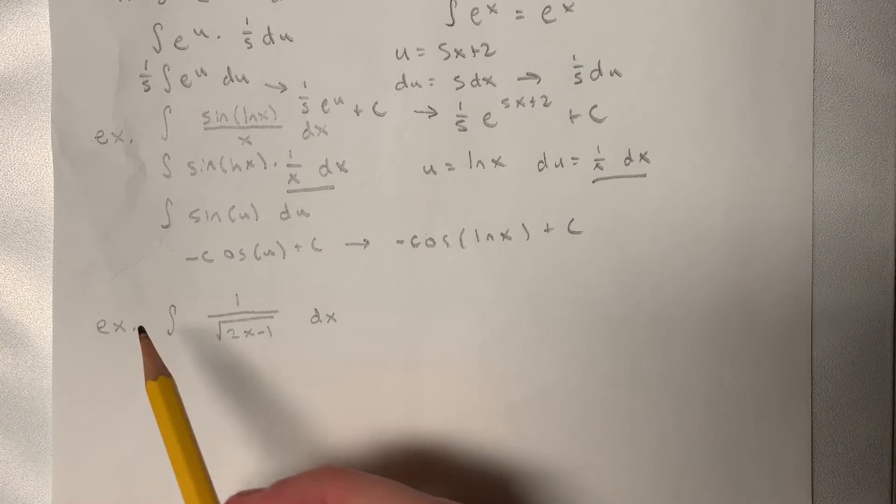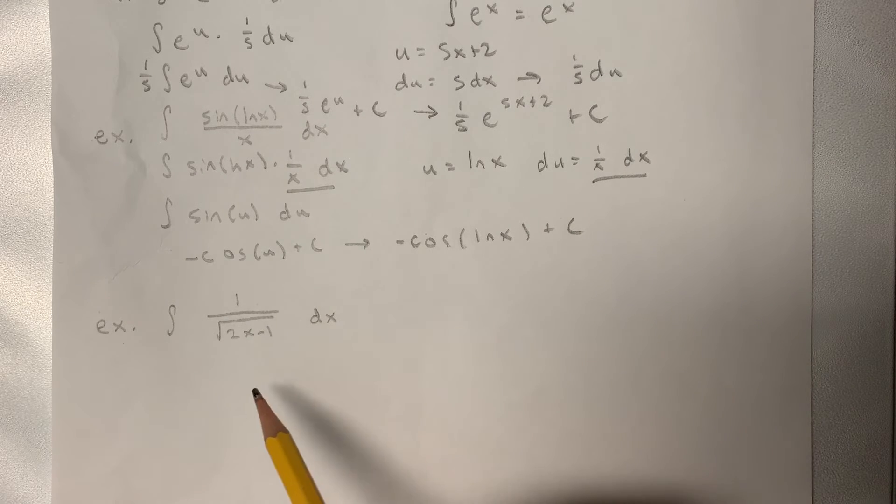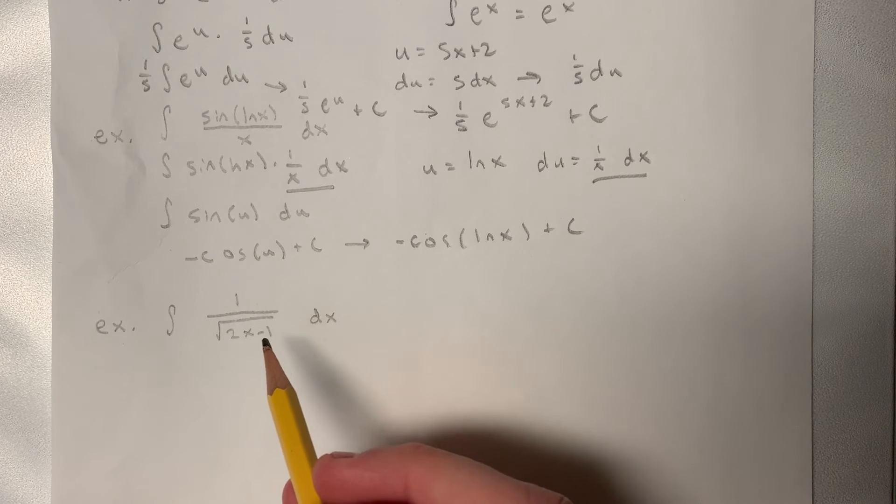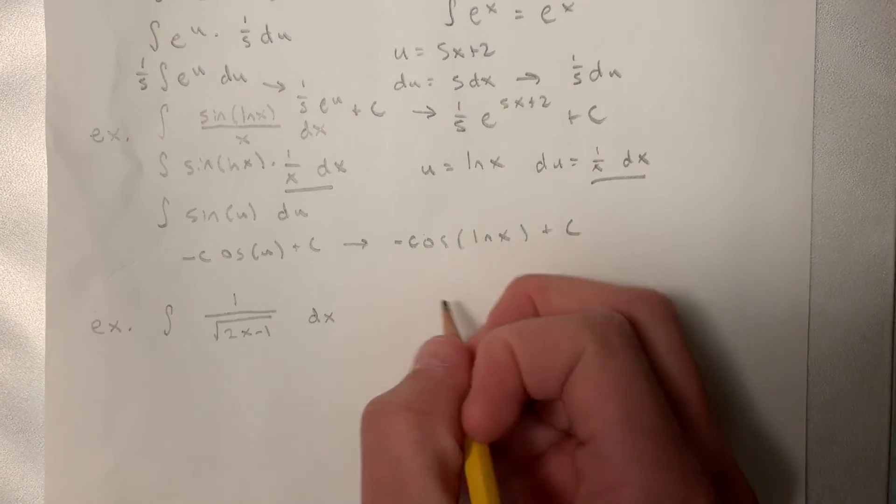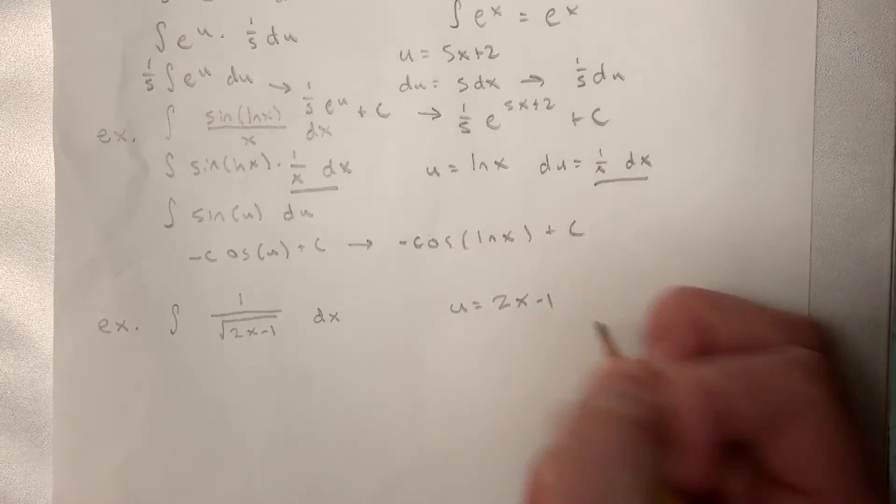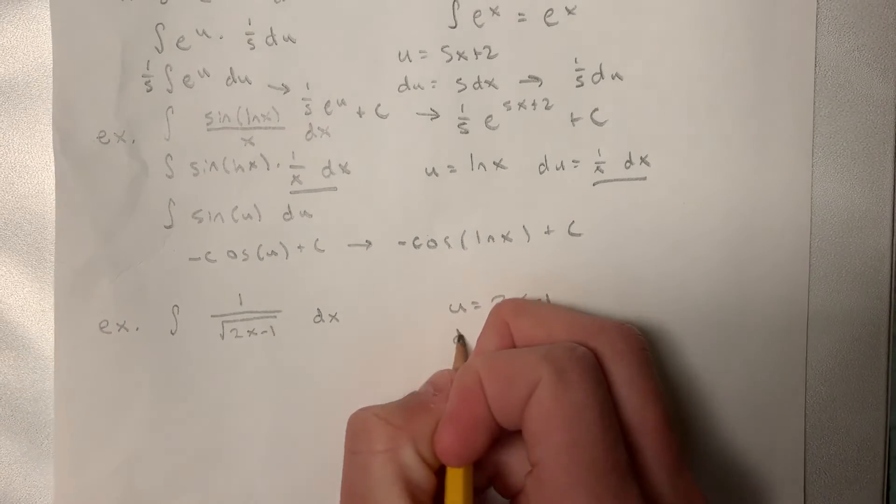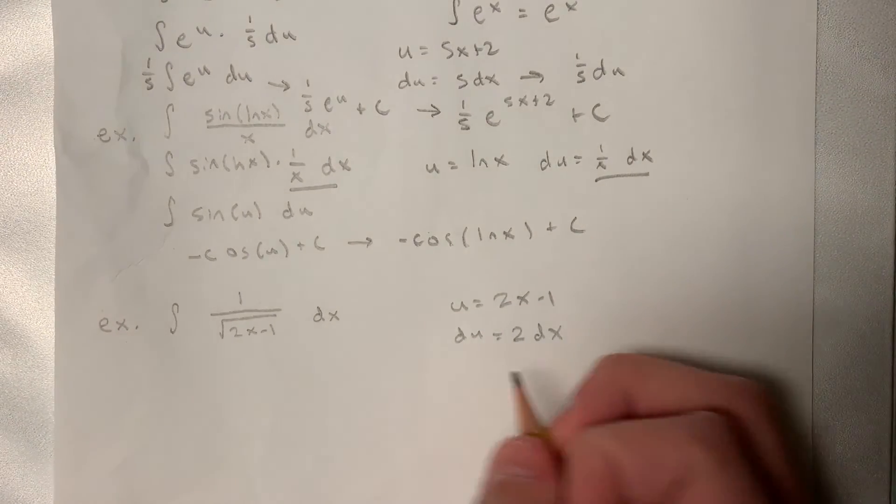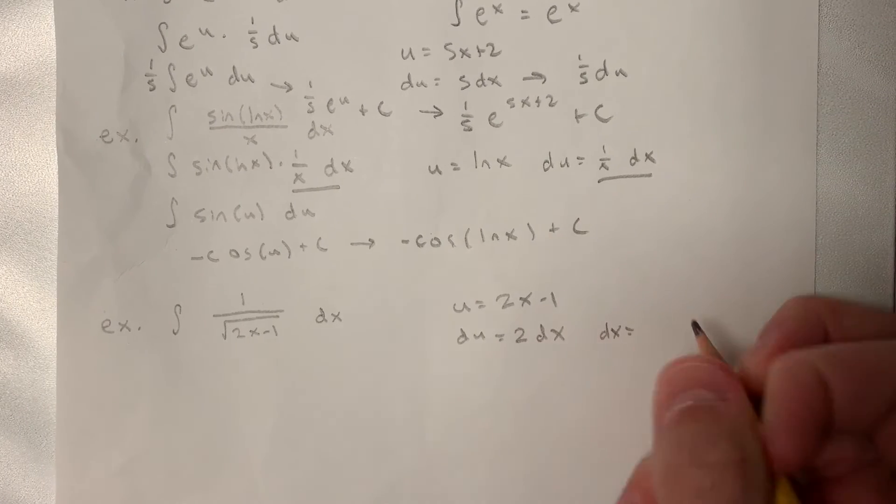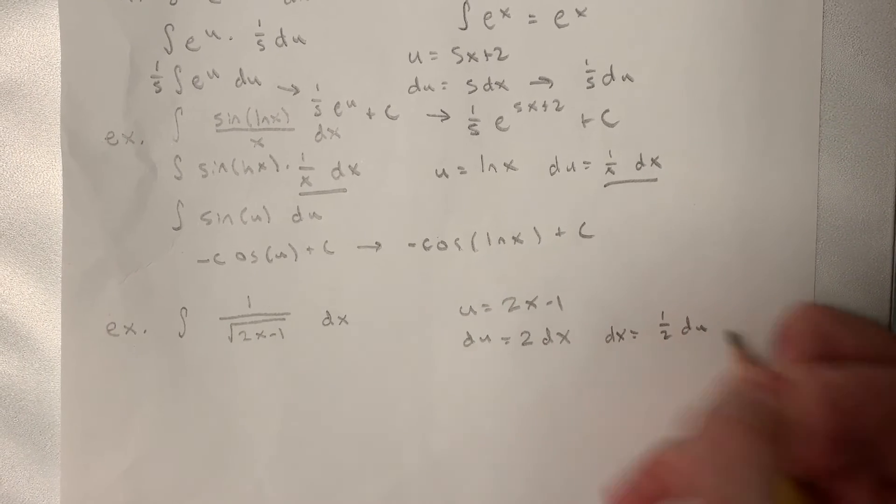Now for the final example, we have the integral of 1 divided by the square root of 2x minus 1. So we see that we have the function 2x minus 1 within the square root. So let's take that to be our u. Okay, taking the derivative, we get du equals 2 dx, or our dx equals 1 half du.